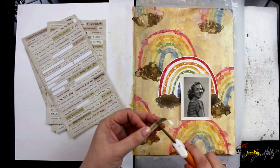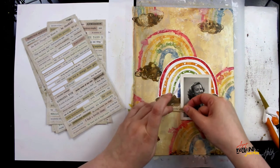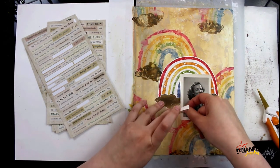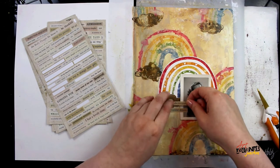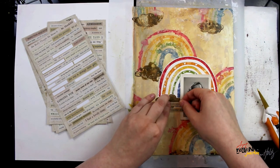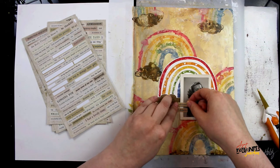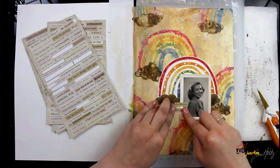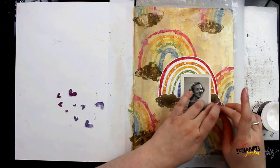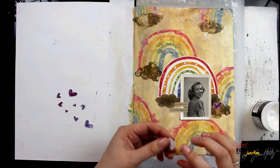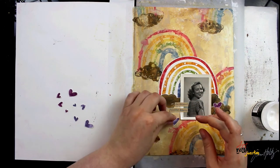I'm also going to use the Tim Holtz Ideaology clipping sticker, and I'm cutting the sticker in half to say 'she dreamed beautiful dreams,' which went nicely with the graduation photo. Rainbows and clouds are often associated with dreams, so it fits in both ways. I'm going to finish out the page by gluing down these hearts.